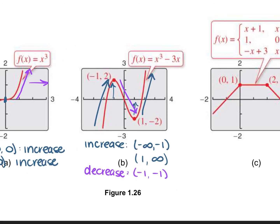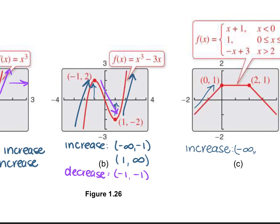For graph c, you have an increase, a decrease, and a constant. Looking from left to right where the line goes up, you have an increase from negative infinity to 0. You also have a decrease from 2 to positive infinity. And you have a constant where it's horizontal or stays the same from 0 to 2.